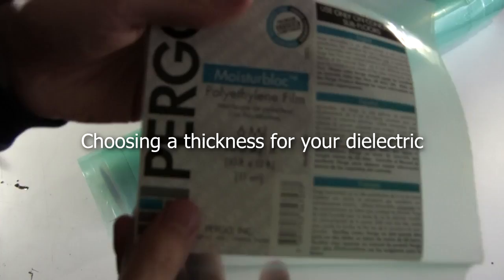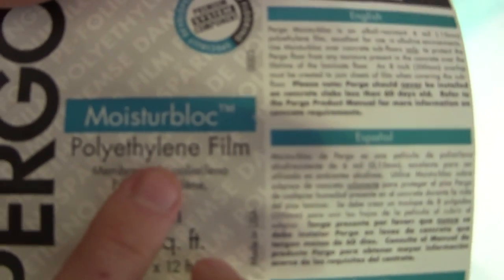How do you choose the thickness for your dielectric? I sometimes use layers of this polyethylene as my dielectric. I got it from a carpet store. They use it under carpets to prevent any water in the carpet from going down into the floorboards. But how many layers should I use?